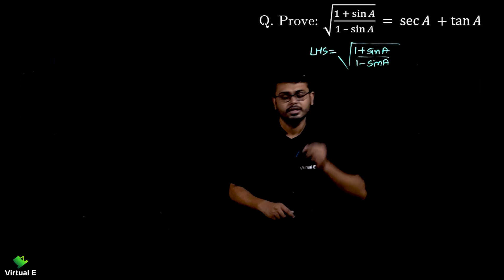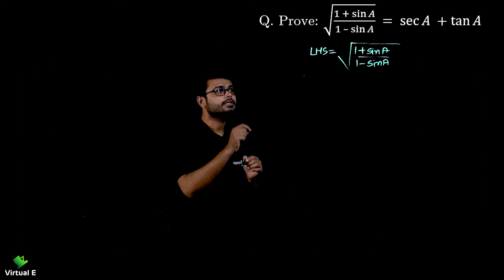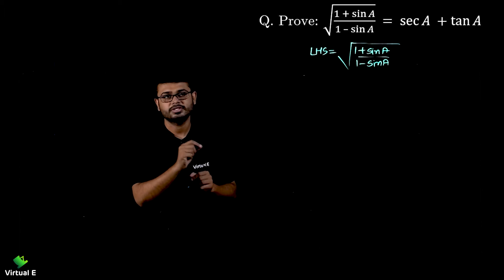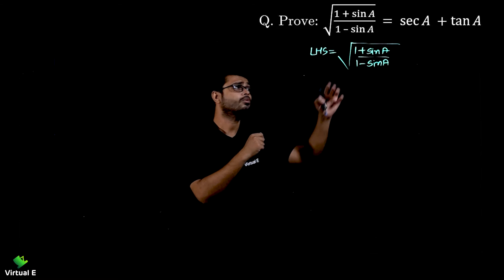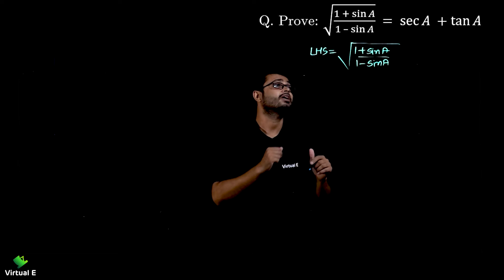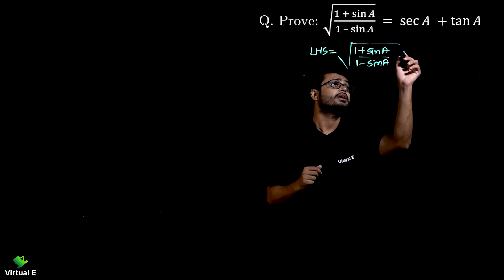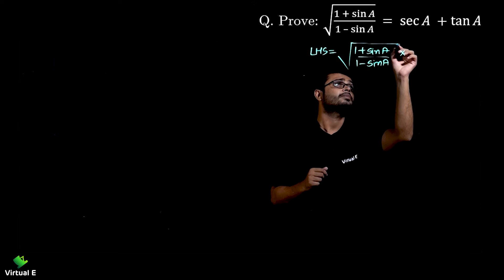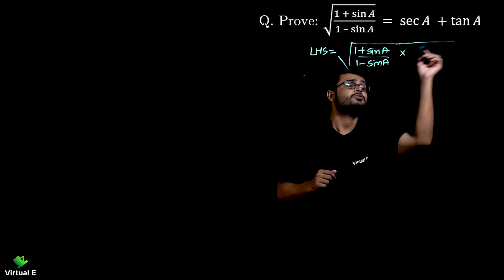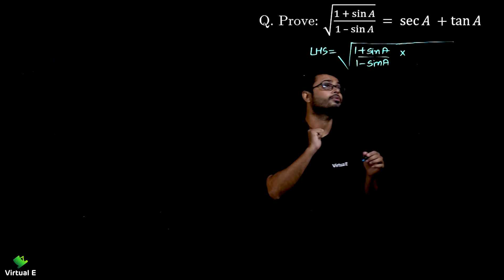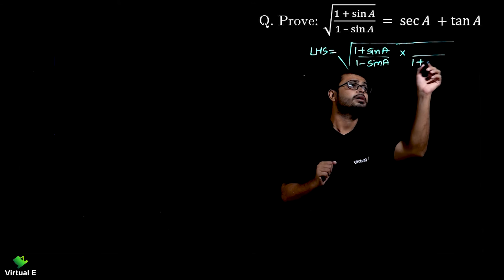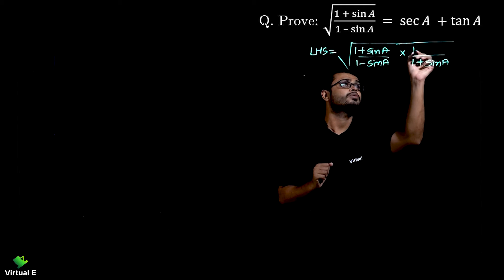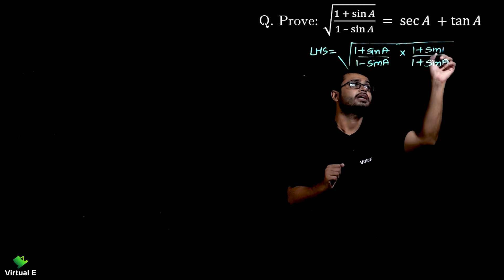Here we are going to take help of rational or irrational numbers — we learned in grade 9 how to remove the square root. So what I will be doing is multiplying — let me extend the square root — I'm going to multiply by the conjugate, that is (1 + sinA) in the numerator and (1 + sinA) in the denominator.